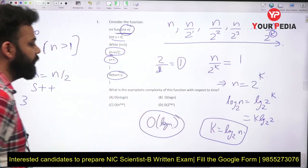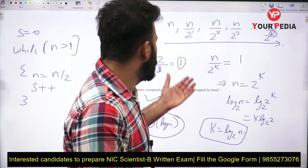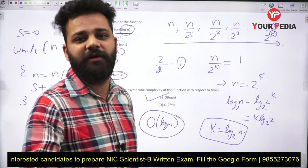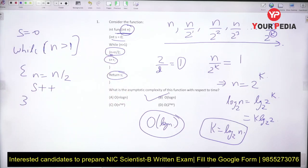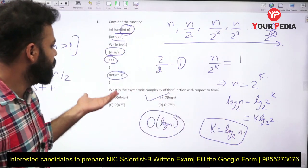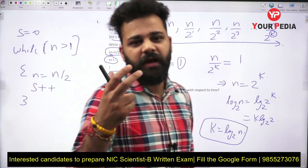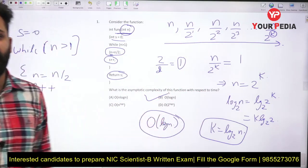The time complexity of this function is O(log n) because it runs log n times, so the correct answer is option B. Compared to the Scientist B exam, where time complexity questions involved nested loops, here you have a simple loop where n is divided by 2 each iteration — n, n/2, n/4, up to n/2^k — which you equate to 1 to find k. It is much easier than the Scientist B exam.